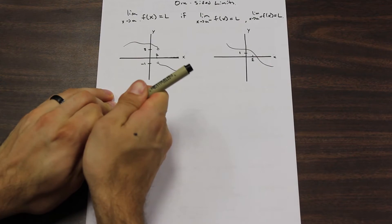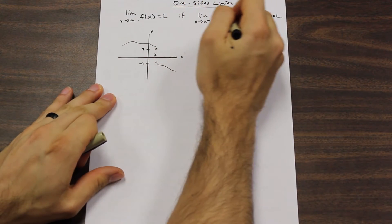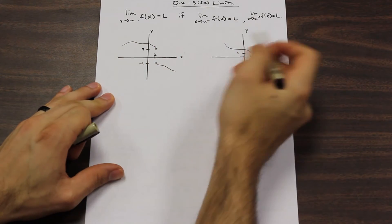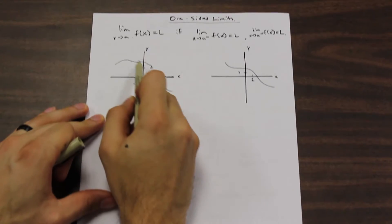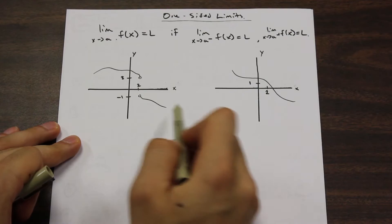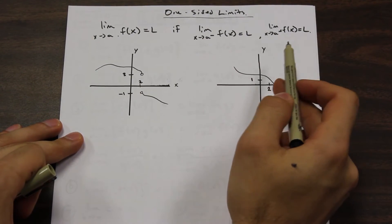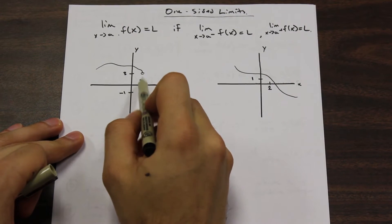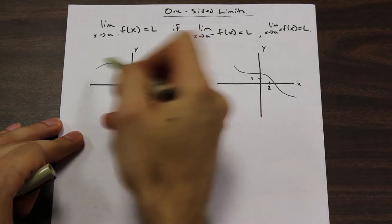This is what we call one-sided limits. One-sided limits are when we approach a function from the left and from the right. The limits must be equal. So if we have some discontinuity in the function at some point, at that point the limit is going to be two different values when we come from the left or the right.